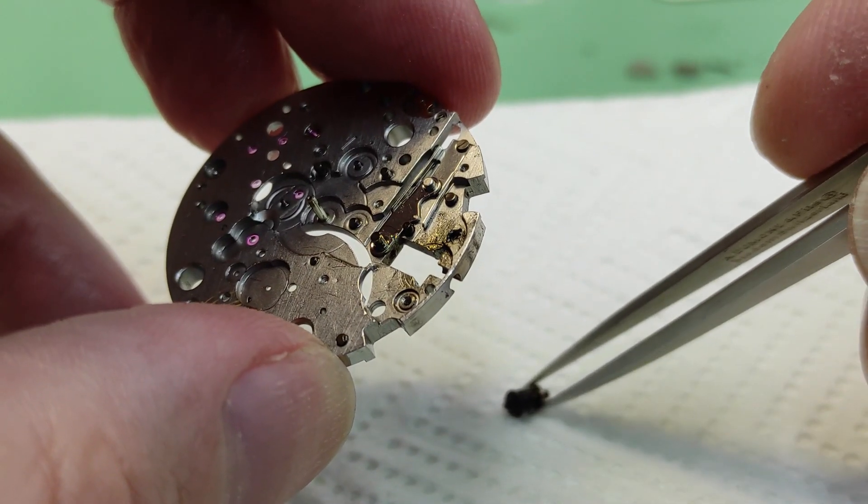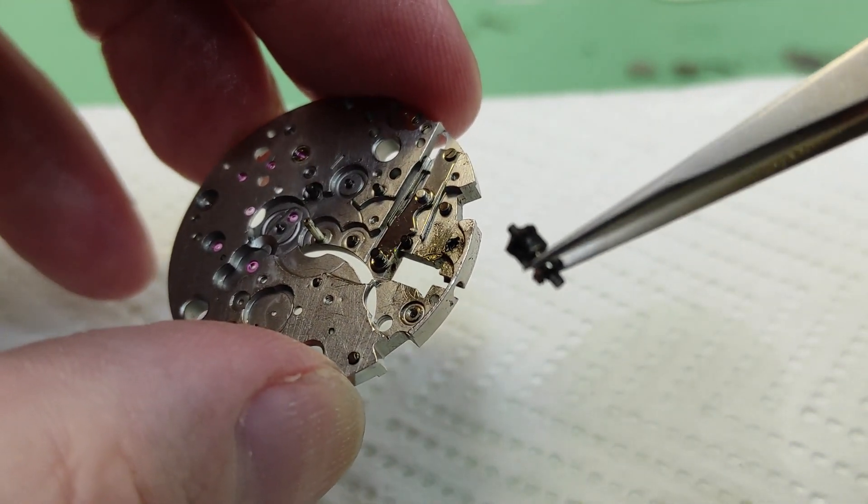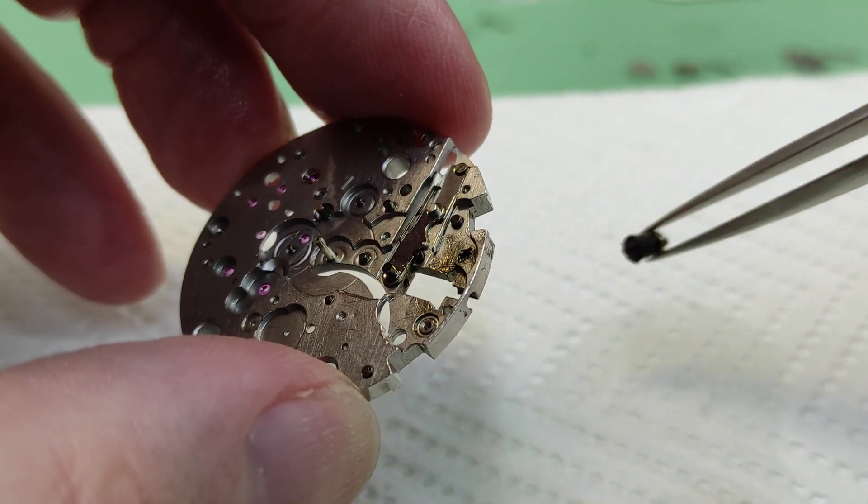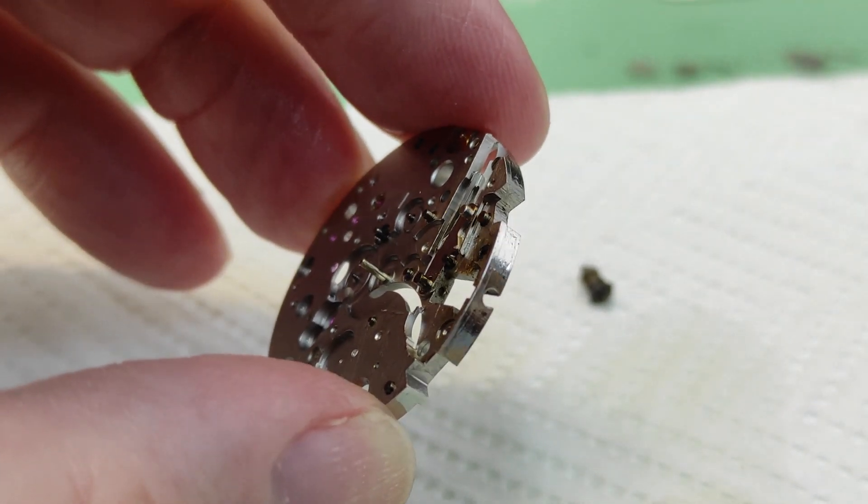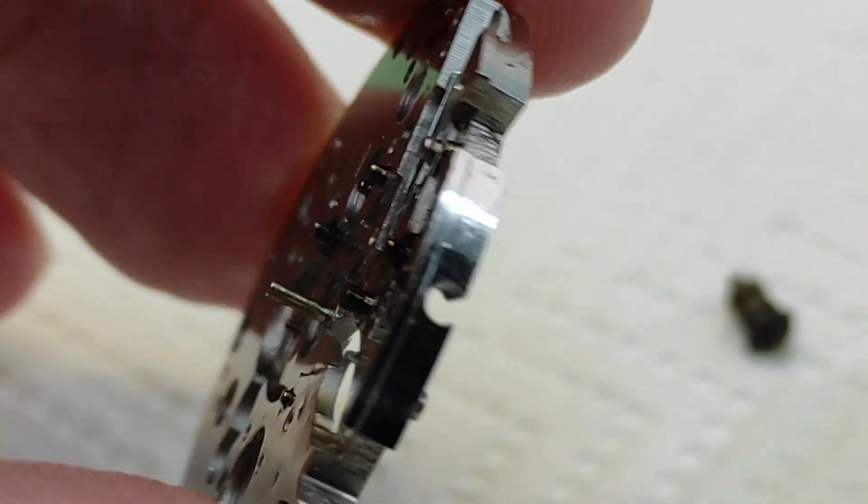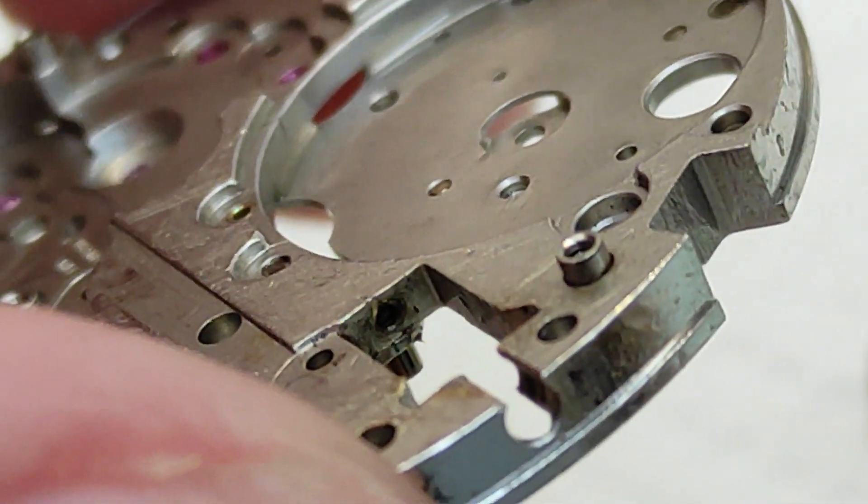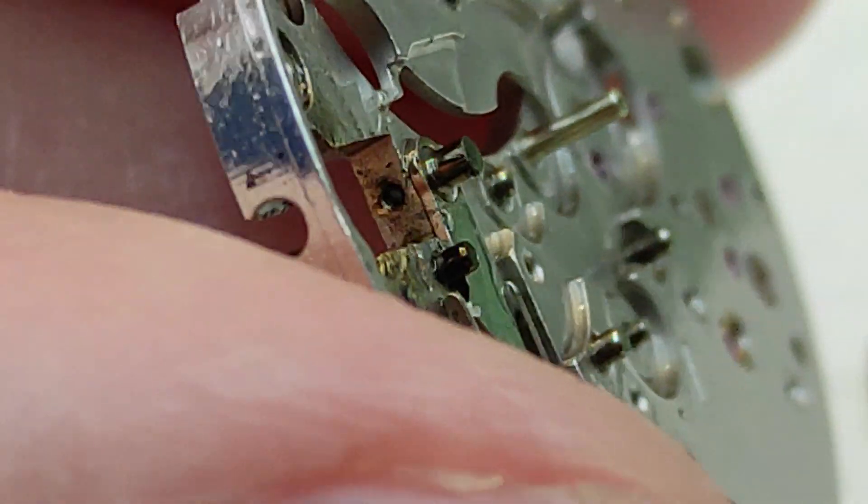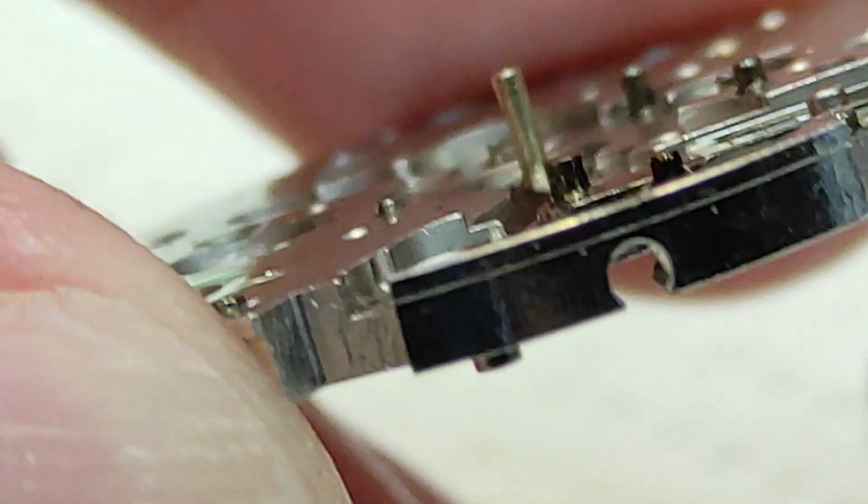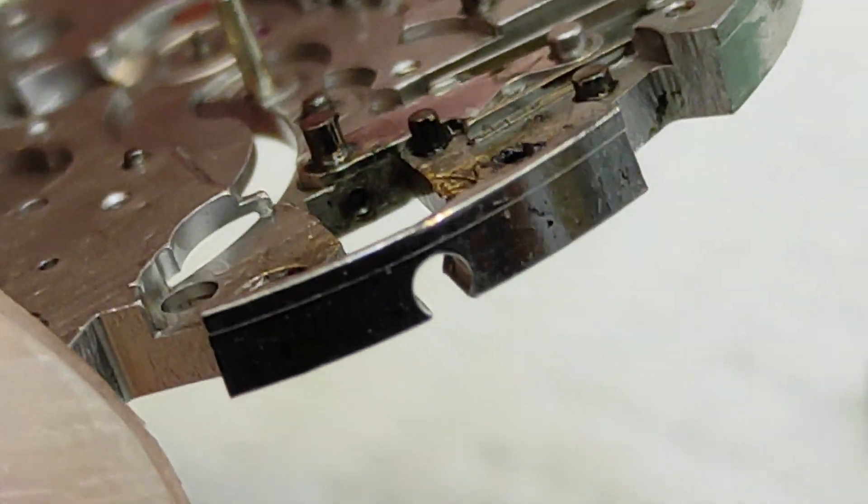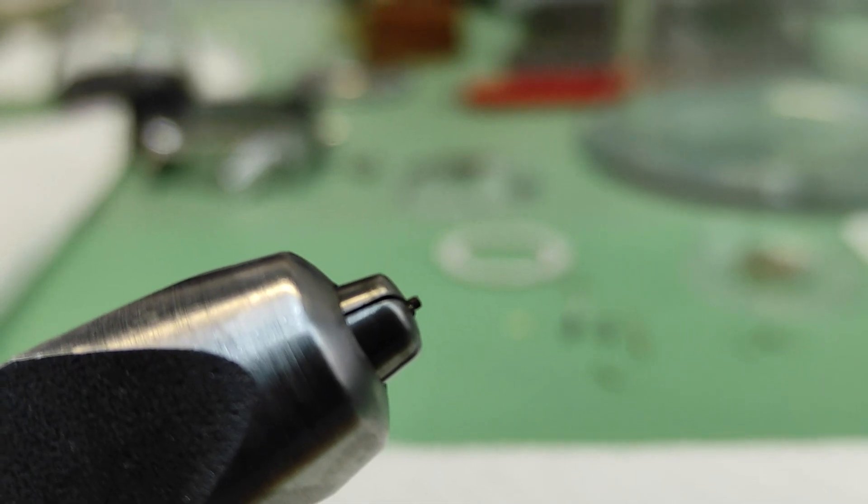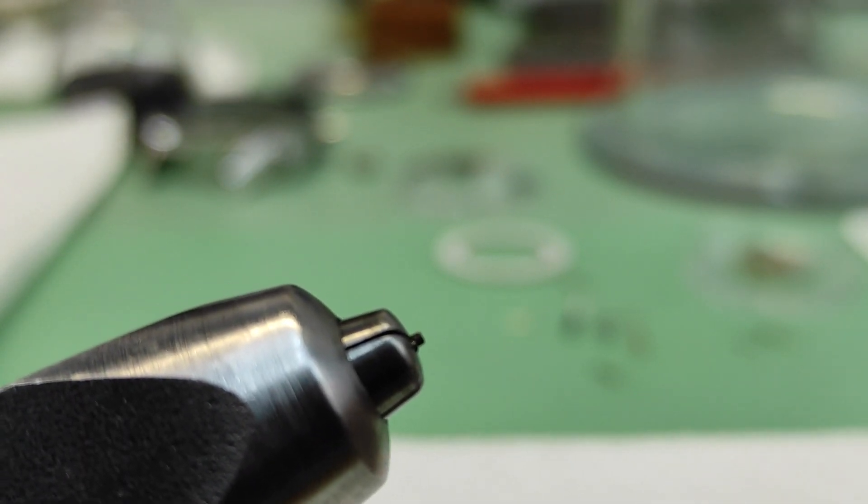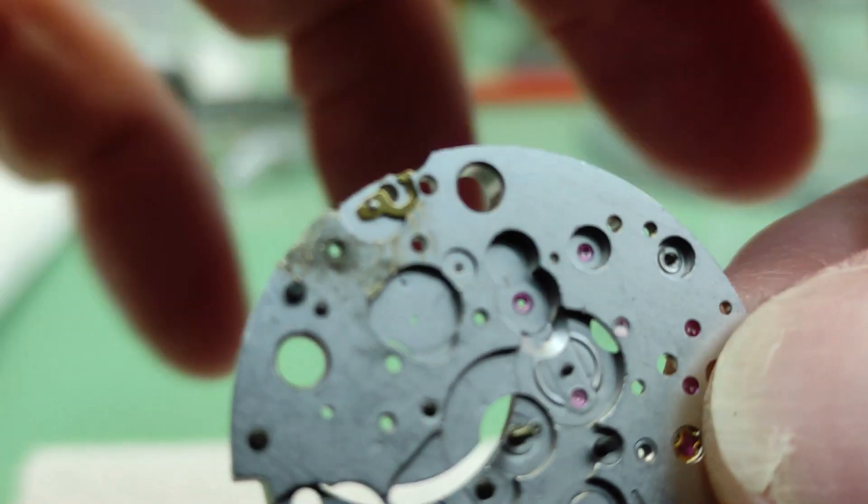After a long time, I managed to remove the main part from the rest of the wall and spring. After a long dance with the paint and the thread, we managed to remove the screws.